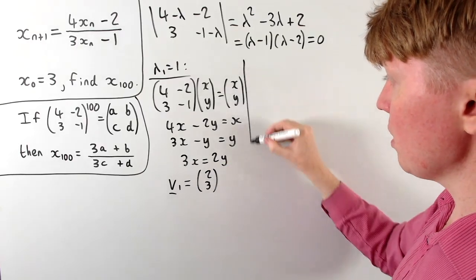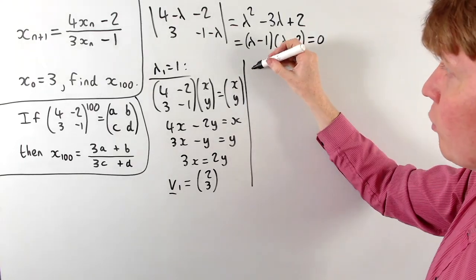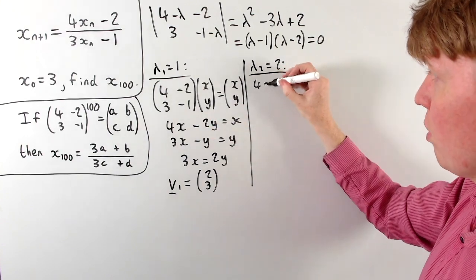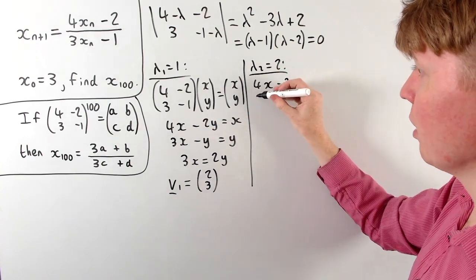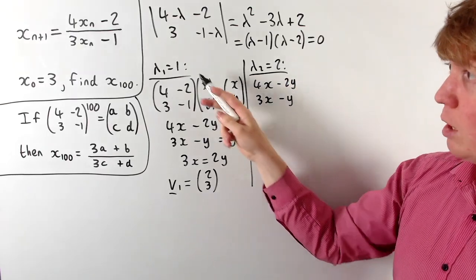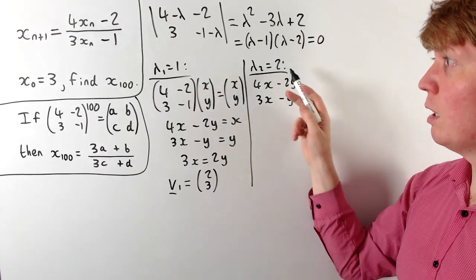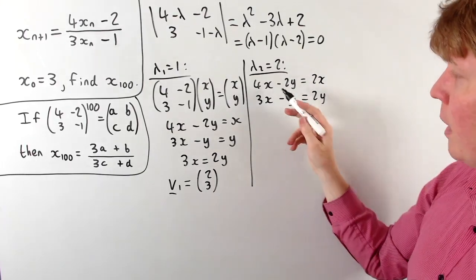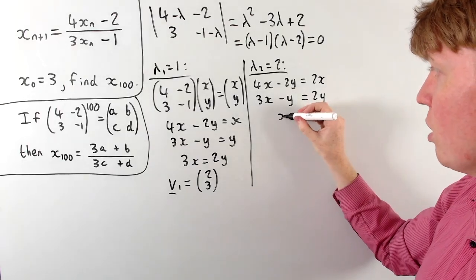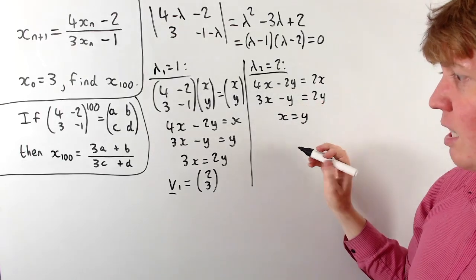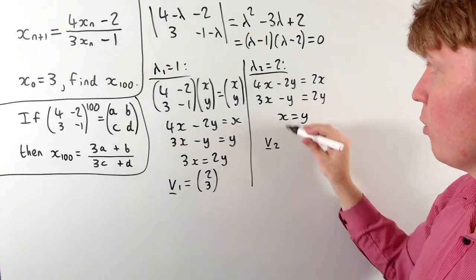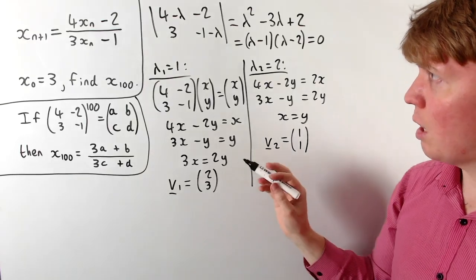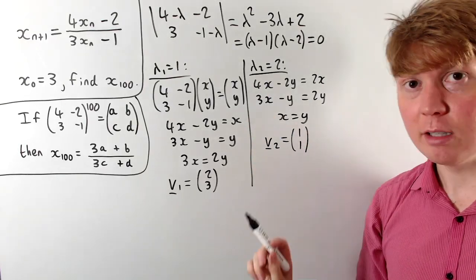For eigenvalue λ₂ = 2, we solve 4x − 2y = 2x and 3x − y = 2y. Both equations reduce to x = y, so our second eigenvector is simply [1; 1].